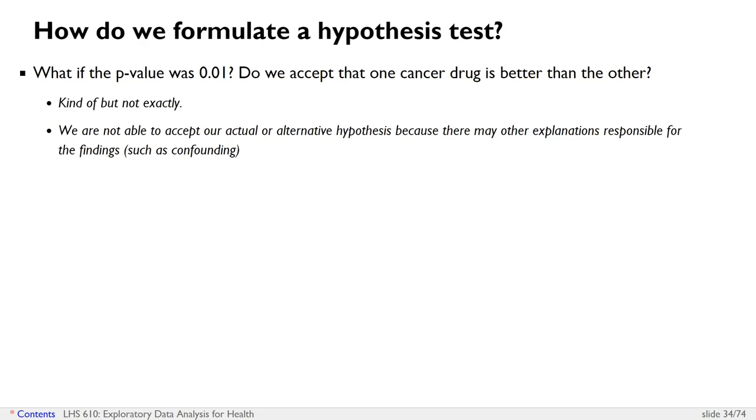However, we can't therefore say that one cancer drug is better than the other because the difference we found might be due to things like confounding, which we haven't accounted for. So recognize that based on a statistical test, you can never really actually accept your alternative hypothesis or accept your actual hypothesis. What you can do is reject the null hypothesis and say that there are multiple reasons why our null hypothesis appears to be rejected. One of those possibilities is that our actual hypothesis is true, but there are multiple other possible explanations, which is why we can't just automatically say that one drug is better than the other drug.